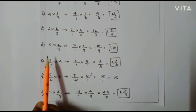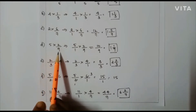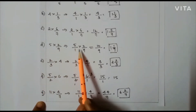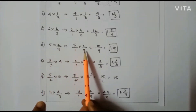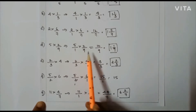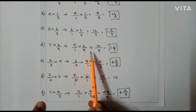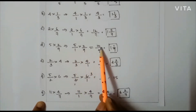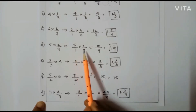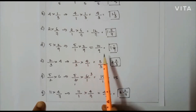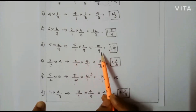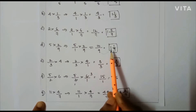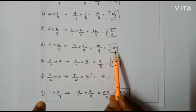Next problem: 5 × 2/9, that is 5/1 × 2/9. I can't cancel here. So 5 × 2 = 10, and 1 × 9 = 9. So 10/9 is the answer. If I convert this to a mixed fraction I will get 1 and 1/9.